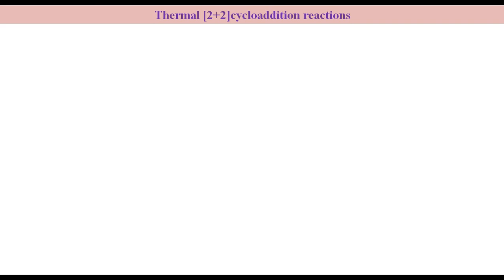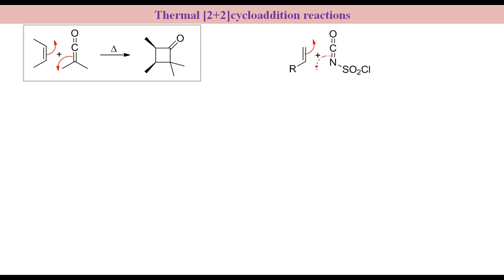These examples are [2+2] cycloaddition reaction of alkene with ketene to form cyclobutanone and [2+2] cycloaddition reaction of alkene with isocyanate to produce beta-lactam.